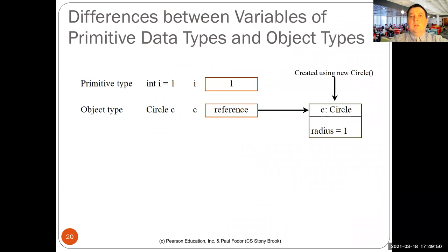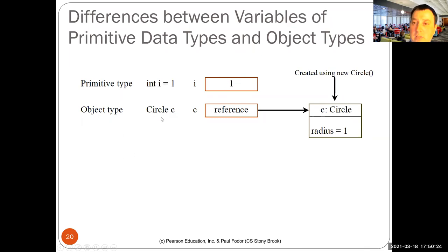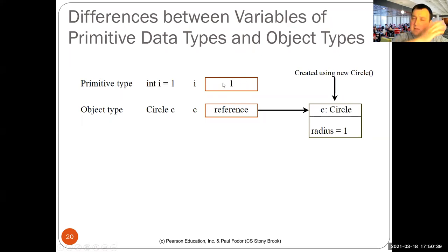All classes are reference types — when we define a variable of a class type, that variable contains the address of the object created in memory, which is different from primitive variables that contain the value itself. There are only eight primitive types, which contain values directly. Everything else in Java — including arrays — are objects stored as references to where they are in memory.